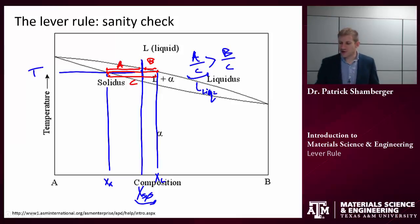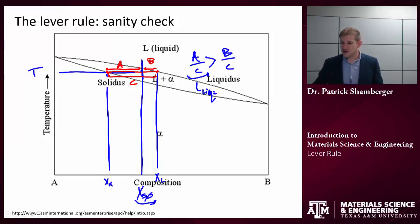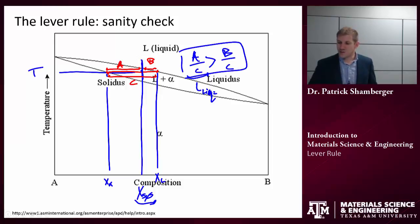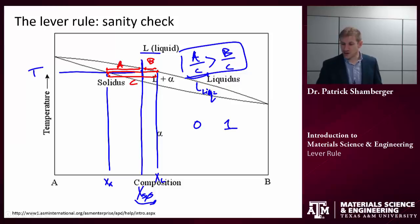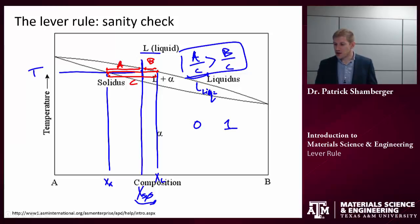This is the sanity check: look at the system and see if the ratios you're calculating make sense. Fractions should always be between 0 and 1. The most common mistake students make is mixing up which ratio refers to liquid and which refers to solid. Since I know there's more liquid present, A over C — which is larger than B over C — refers to the liquid fraction.